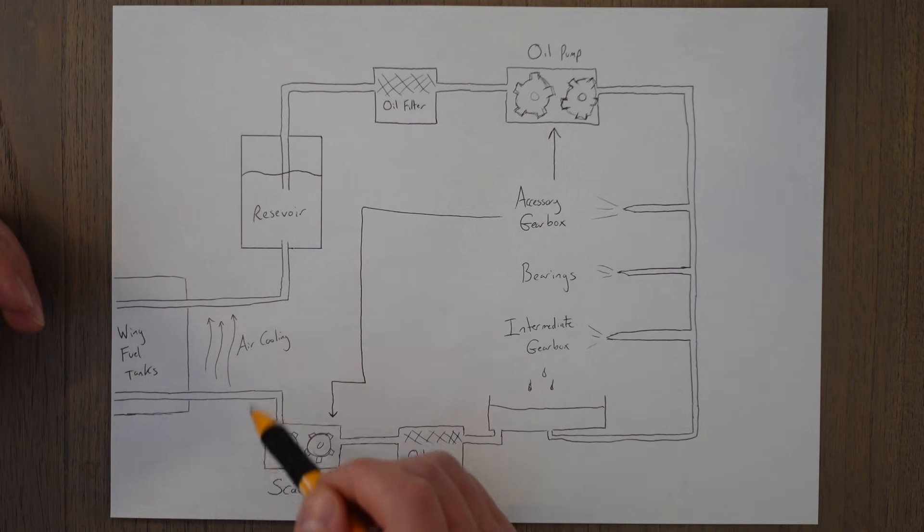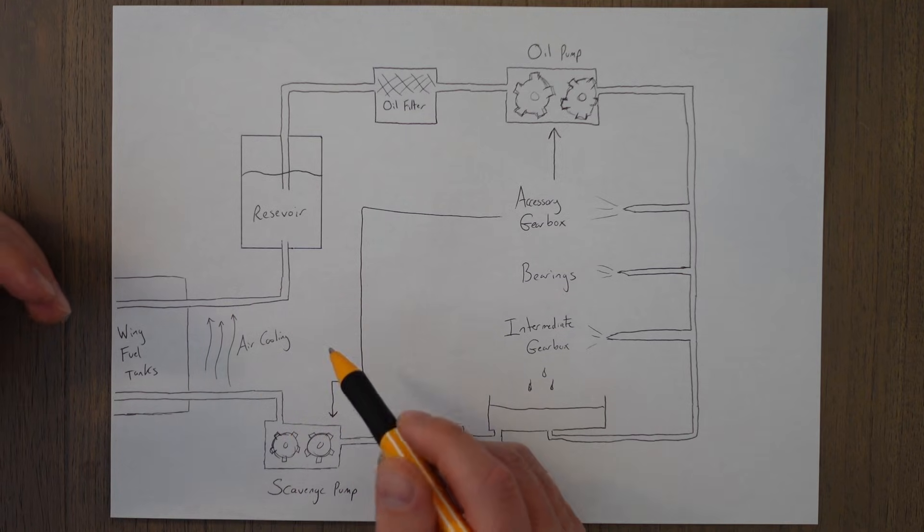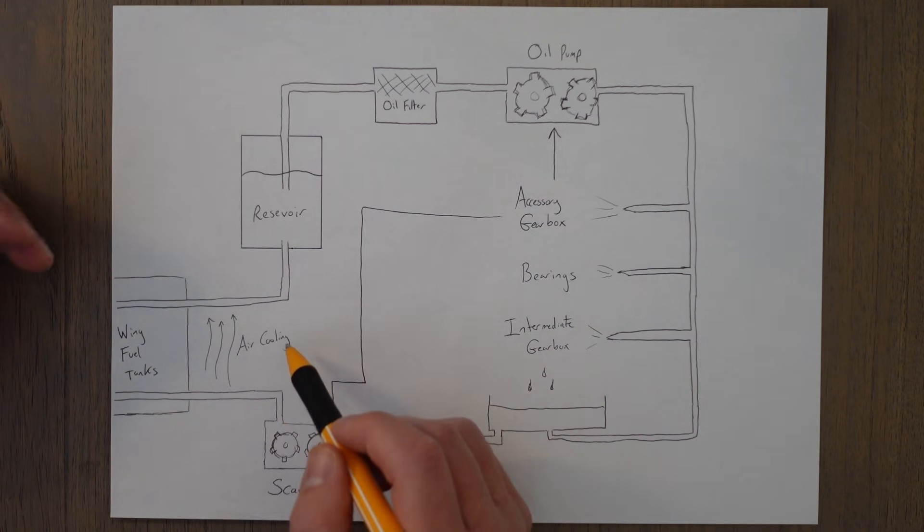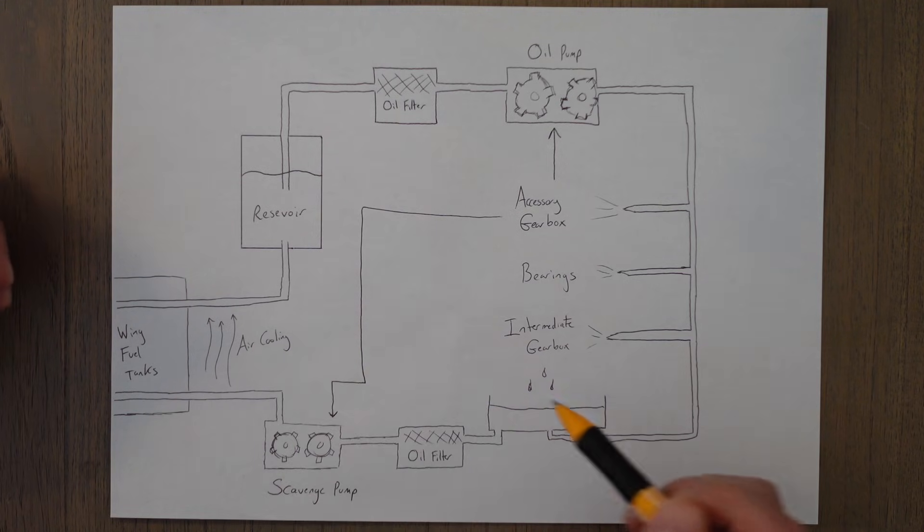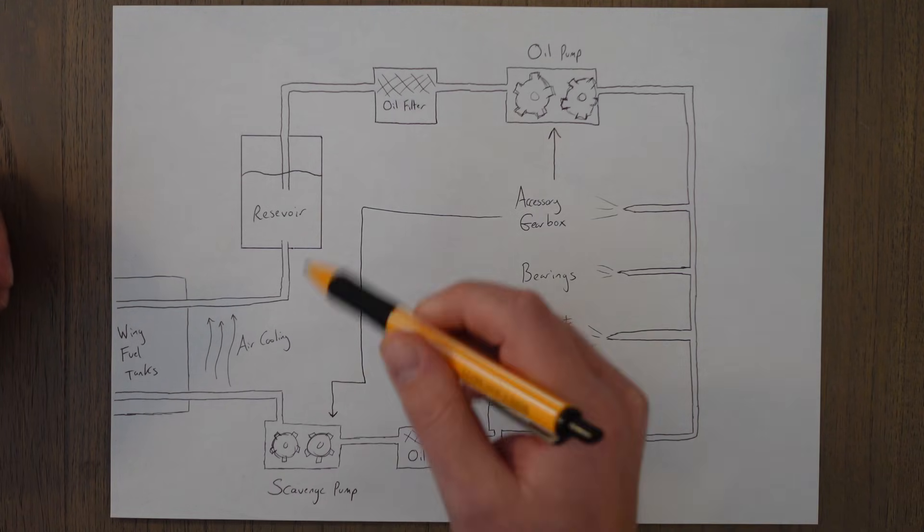The oil will also have tubes with air passing over them from the outside, which is known as ram air, which also helps to cool the oil back down before it enters into the reservoir and the whole process starts again.